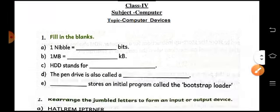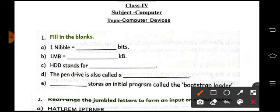So let's do the fill in the blanks. One nibble is equal to how many bits? 4 bits. 1 MB is equal to? Yes, 1000 kilobits.